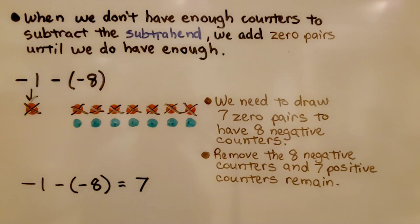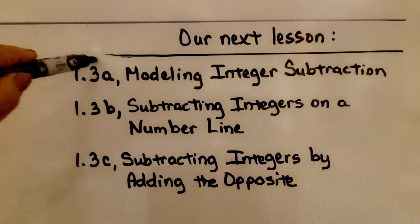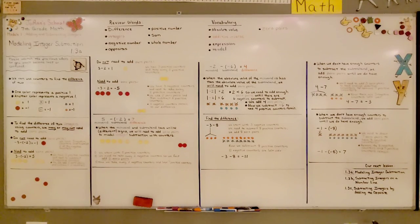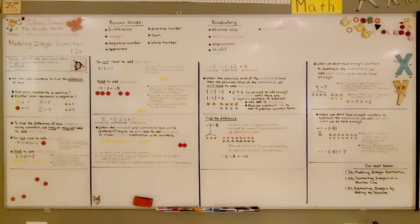If this lesson seemed very confusing, go back and try watching it again — maybe it'll make sense. We've finished this lesson and we're going to move on to lesson 1.3b, where we'll be subtracting integers on a number line. Remember: when you don't have enough counters to subtract the subtrahend, we add zero pairs until we do have enough. Have a wonderful day and I hope you'll join me for the next lesson. Bye!